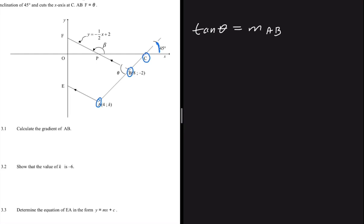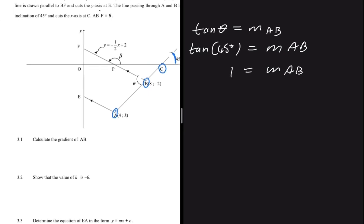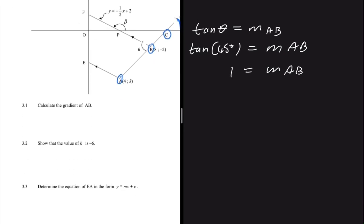From here we can say that tan(45°) equals the gradient of AB. So the gradient of AB equals tan(45°), which is 1. Therefore the gradient of AB is equal to 1, and that's how you do that question.